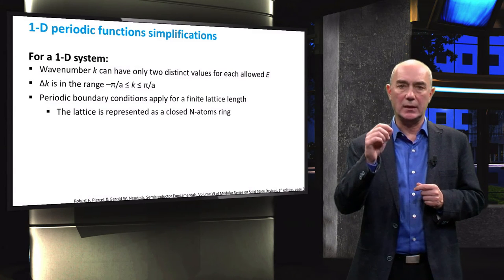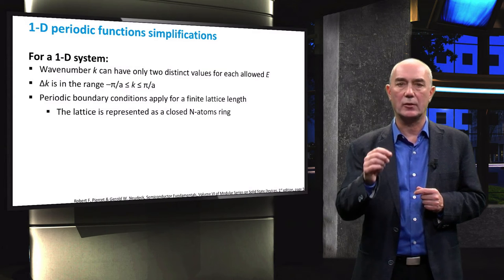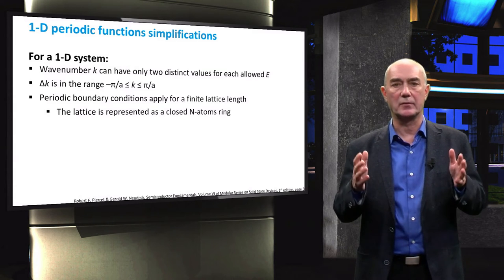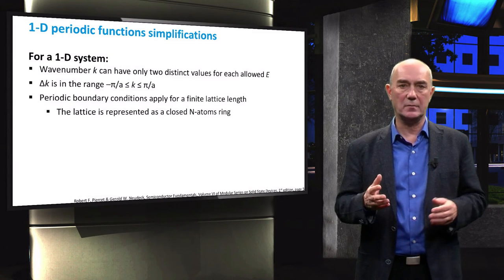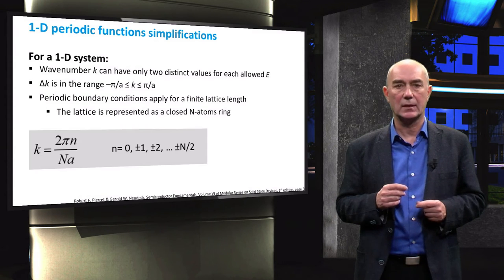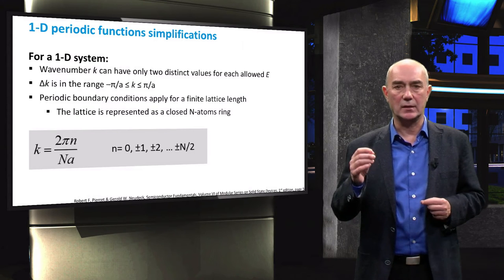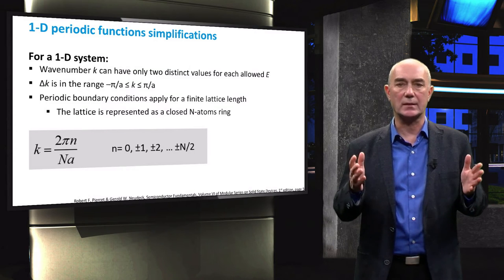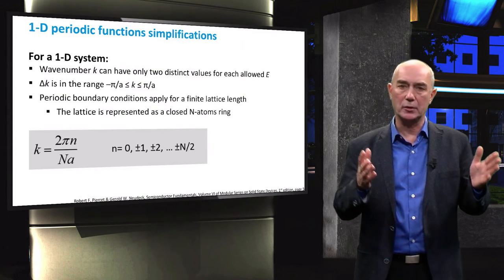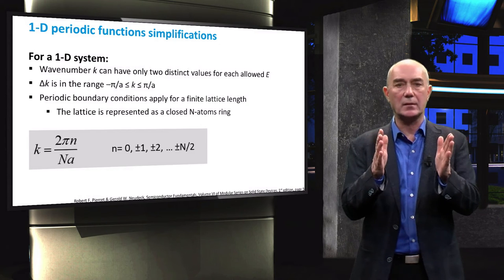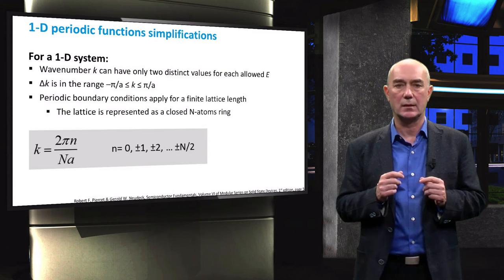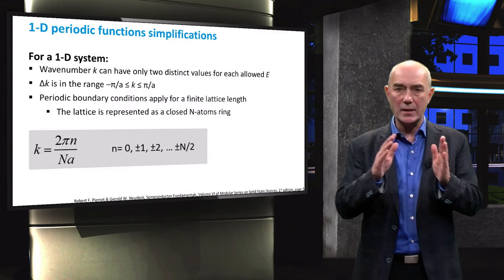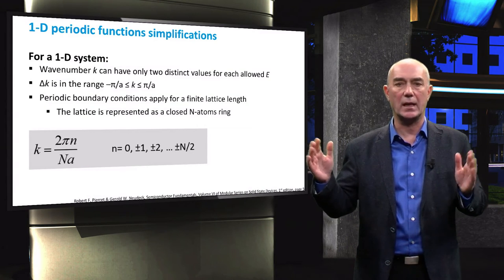This number equals the number of units, or in our case atoms, that form the lattice. Let's assume the number of atoms is capital N. Since k is inversely proportional to the lattice constant, it can be concluded that the closer the atoms are to each other, the closer the k values will be spaced. This can lead to a quasi-continuous range of allowed k values.